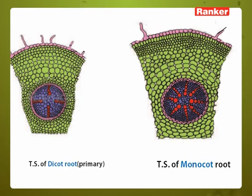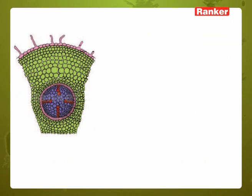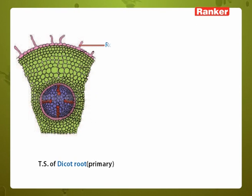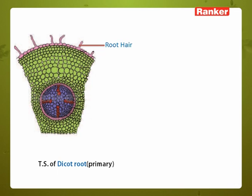We have two diagrams here, but first we will be discussing about the dicot root. First, we have talked about root hairs — these are the epidermal outgrowths, and which shows the area of absorption of water is done with the root hairs.